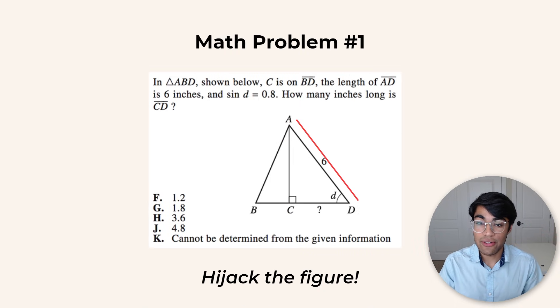The first strategy is to hijack the figure. On these types of problems where the ACT gives you a figure, they'll often tell you that the figure is not drawn to scale, but nearly all of the time it will be drawn to scale. In this question, to actually solve the problem, we have to use trig, but what if we just use the figure to approximate the actual length of side CD?